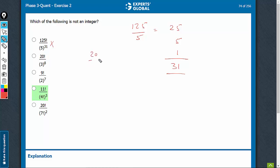Highest power of 3 in 20. 20 upon 3 is 6. 6 upon 3 is 2 more. Highest power of 3 is going to be 8. This is also going to be an integer.